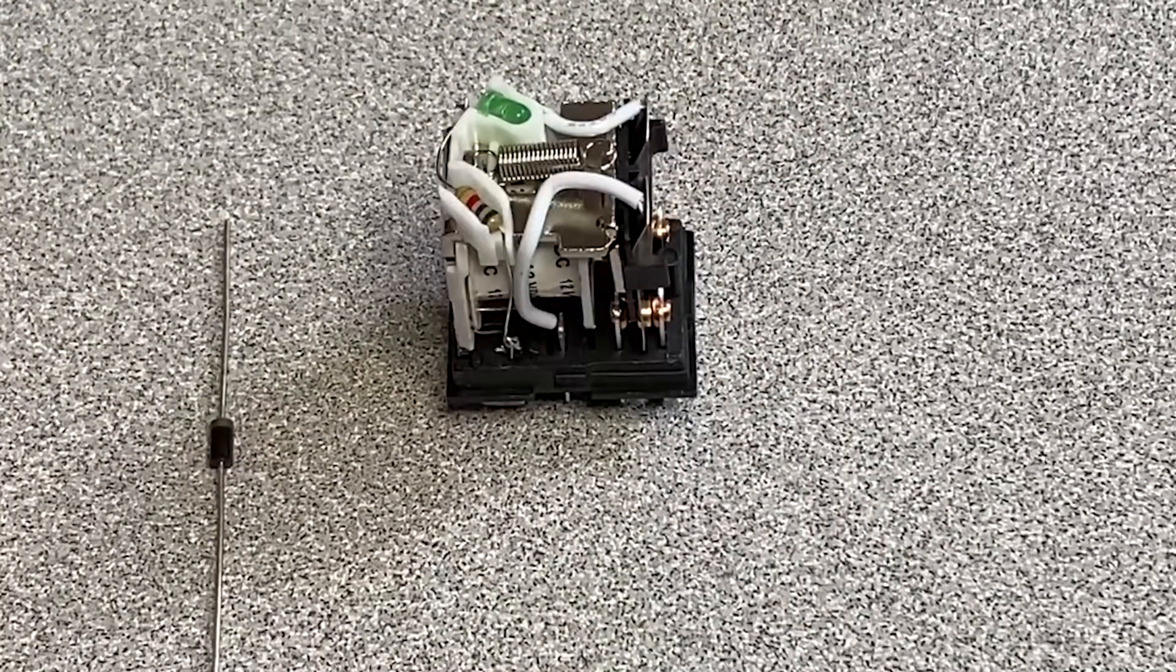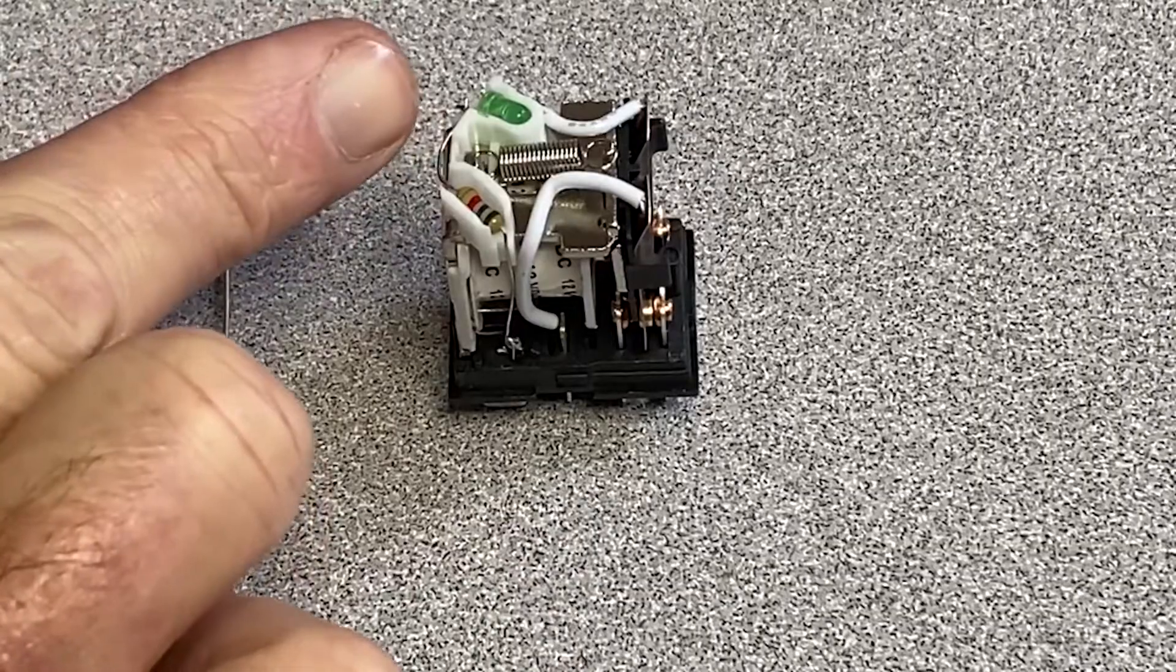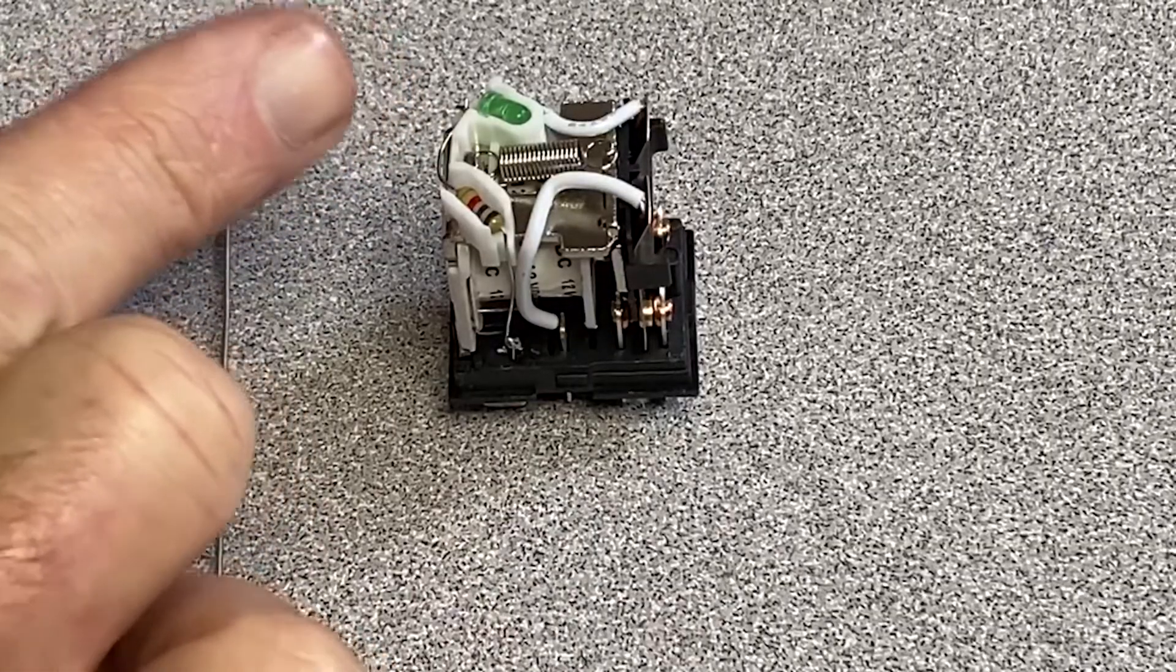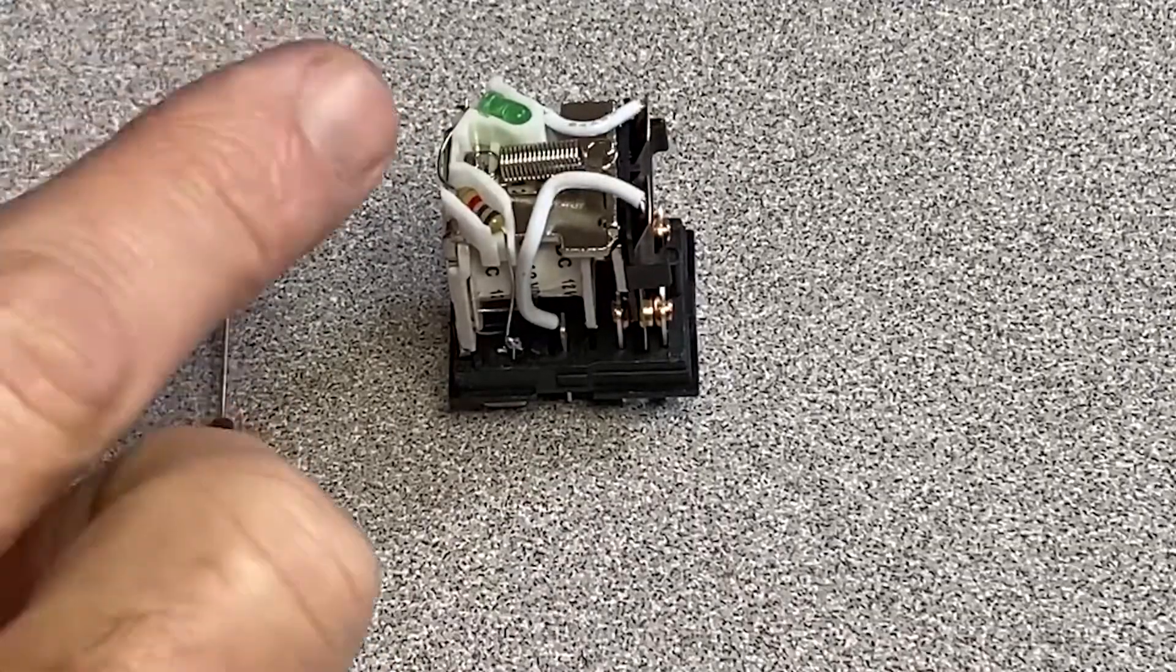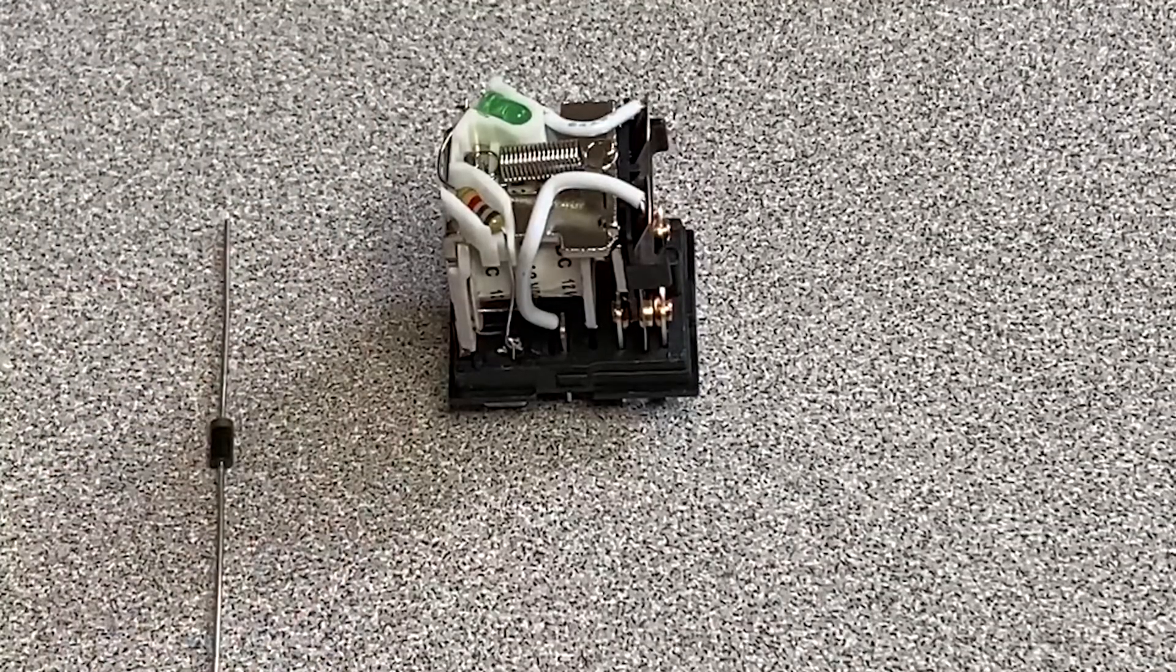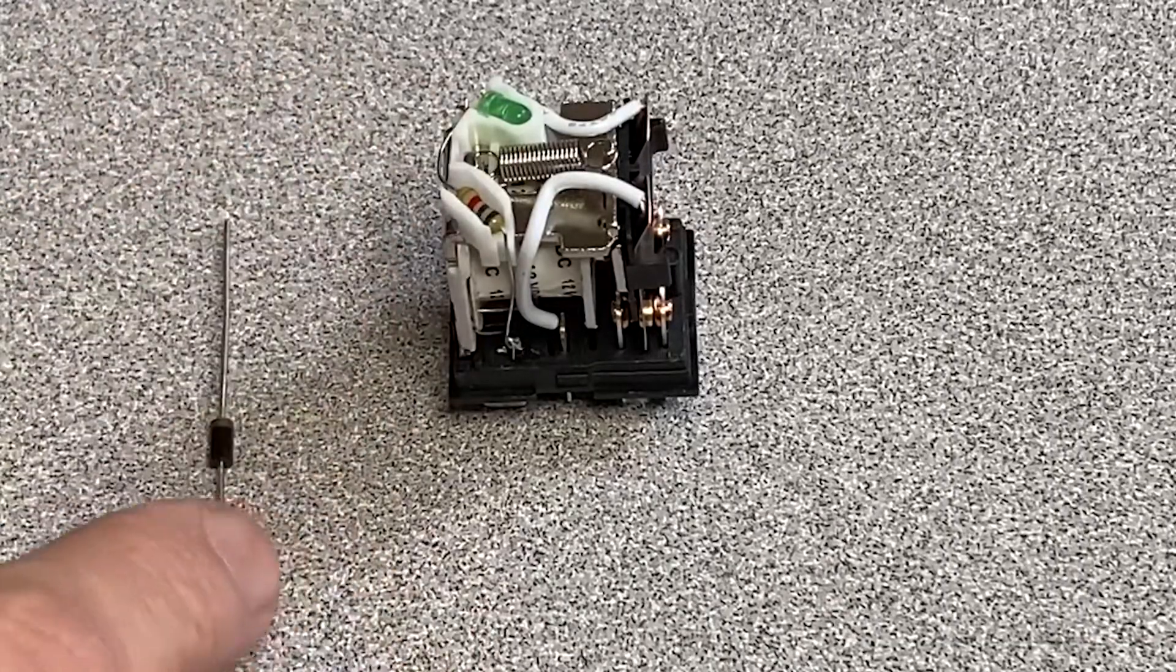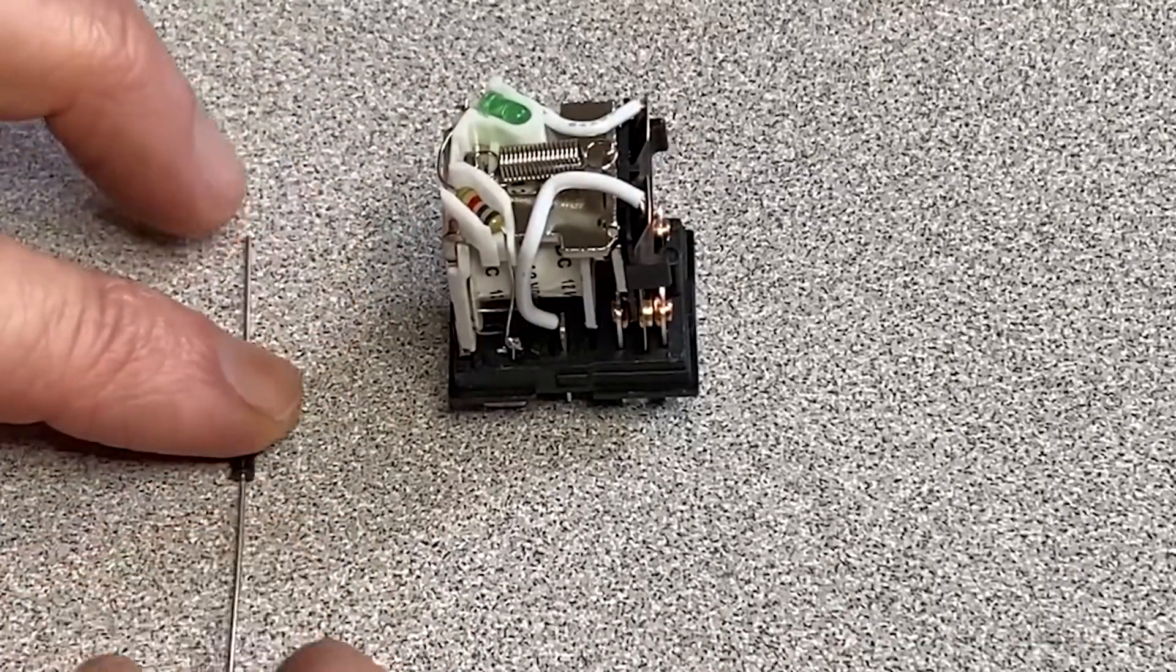This is how I install a diode into a relay. With the relays with the LEDs in them, it is very important that you put it in the right way, because if you put it in backwards, it creates a dead short and will blow fuses in your project, which, of course, you're putting fuses in your project, right?